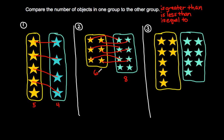The blue group is greater than the yellow group because eight is greater than six, or eight is more than six. By matching, we can see that the blue set is greater because there are leftover blue stars that cannot be matched to any yellow stars.